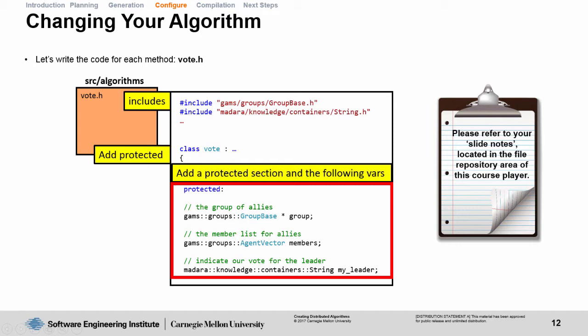In our implementation, we don't double-check to see this, but in the future, if you want to make a more interesting and effective voting algorithm, you could use something like this. You can also see that we have a pointer to the allies group, and we have an agent vector of the members of that group included in the header file.